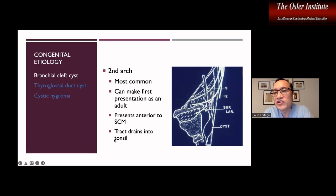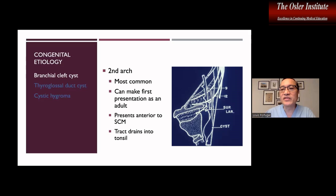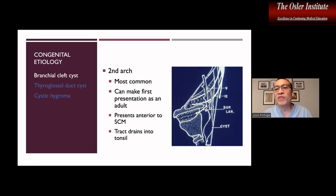A lot of people try to memorize the second arch diagram, but really all you have to remember is: over the two cranial nerves, in between the carotid bifurcation, and into the tonsil. Some board questions may ask about the tract's path, most specifically where it drains. Additionally, successful removal of a branchial cleft cyst that prevents recurrence requires removal not just of the cyst, but as much of this tract as possible — making understanding of the tract's path essential.